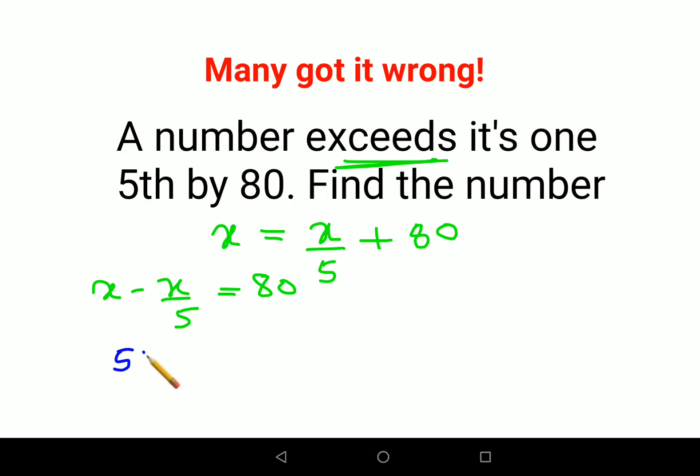...5x minus x upon 5 equals to 80. So 5x minus x is 4x upon 5 equals to 80.